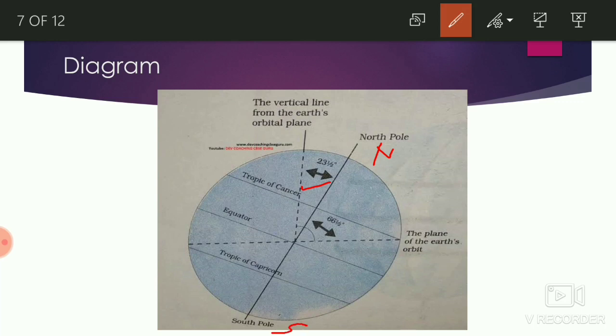The imaginary line which passes through the middle of the Earth is called the equator. The equator divides the Earth into two hemispheres. The part near the north pole is known as the northern hemisphere while the part near the south pole is known as the southern hemisphere.